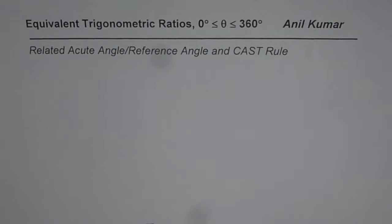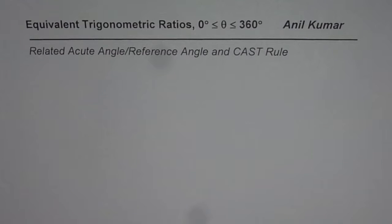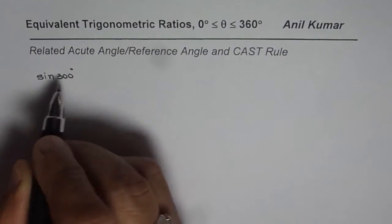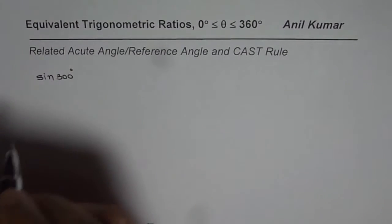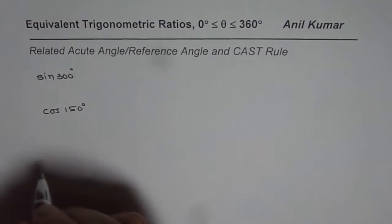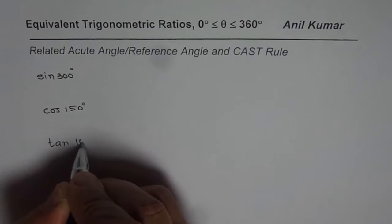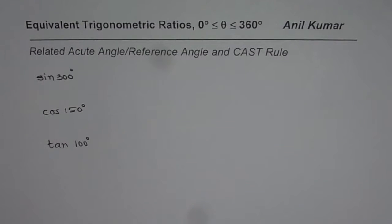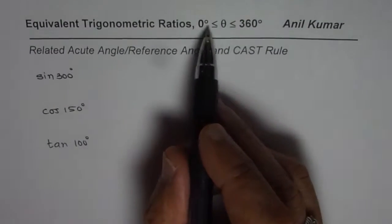I am Anil Kumar and in this video we will try to understand how to find equivalent trigonometric ratios when theta is between 0 to 360 degrees for different trigonometric functions. I will take examples — sine of 300 degrees, cosine of 150 degrees, and tan of 100 degrees — and find their equivalent ratios within theta equals 0 to 360 degrees.